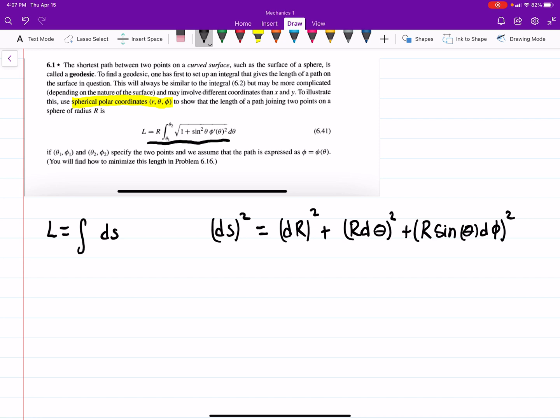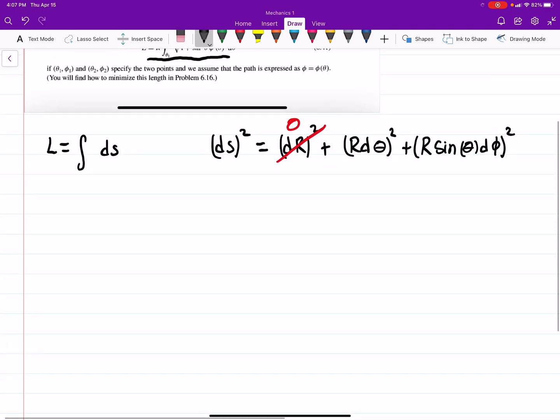So in this case, our radius is constant. It's not changing, so dr is going to be 0. So then we can say dS squared. Our line element is rd theta squared plus rsin theta d phi squared.